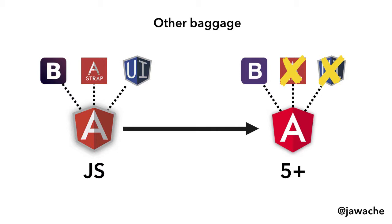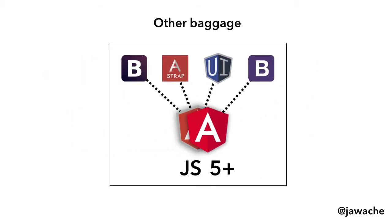The problem is we're not running two separate applications — we're running one application in hybrid mode, and that one application shares the same global namespace and the same memory. So they have to share their baggage. You might be able to share Angular Strap and UI Router because they don't clash, but Bootstrap 2 and Bootstrap 4 will clash — Bootstrap 2 will just overwrite things in Bootstrap 4.